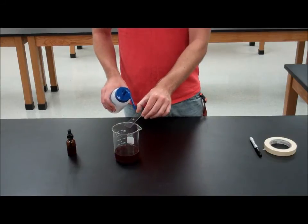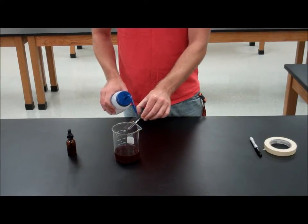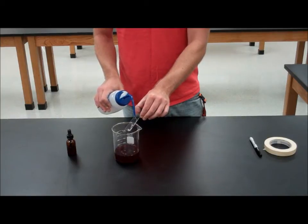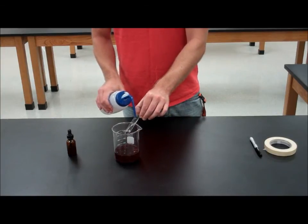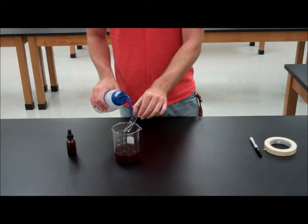When you're rinsing off, use your deionized water and spray above the sample. Don't spray directly on your sample or you might wash it off the slide entirely and have to start over. Spray above and let it run down the slide to rinse it off.